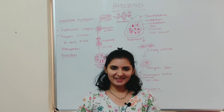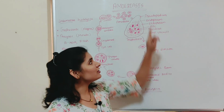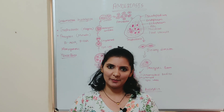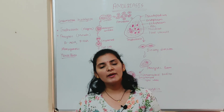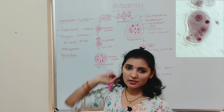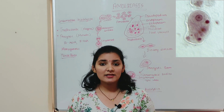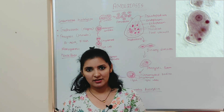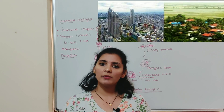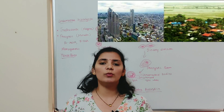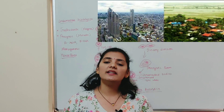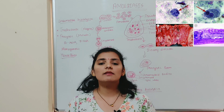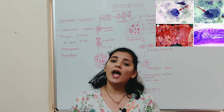Welcome back. In this video I'm going to talk about amoebiasis. Amoebiasis is also called amoebic dysentery. It is a disease caused by a protozoan known as Entamoeba histolytica. Entamoeba histolytica is cosmopolitan in nature, or worldwide in distribution. This disease is very common in rural areas as well as intensely populated urban areas where sanitary conditions are very poor.